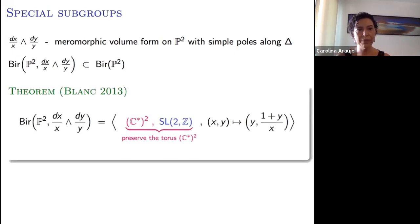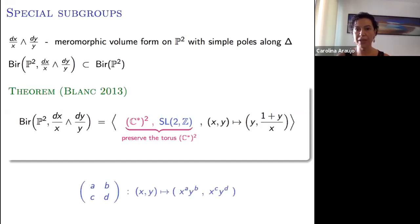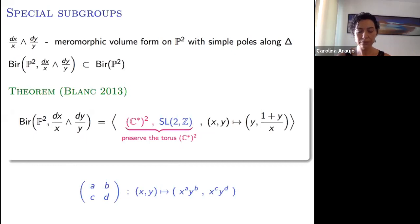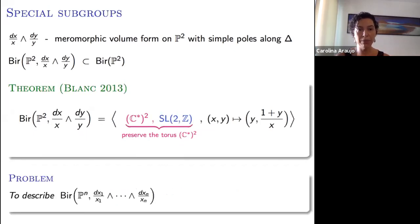One is often interested in special subgroups of the Cremona group. Consider the meromorphic volume form on P^2 with simple poles along the triangle dx/x ∧ dy/y; its poles are along xyz=0. Blanc studied the subgroup of Cremona transformations preserving this volume form. He showed it is generated by the torus action (translations and SL(2,Z) monomial transformations) together with one extra Cremona transformation of order five.